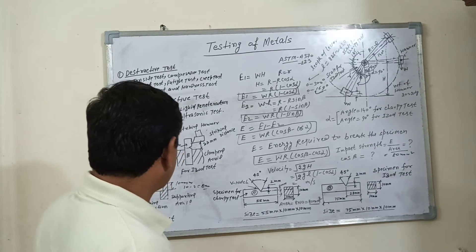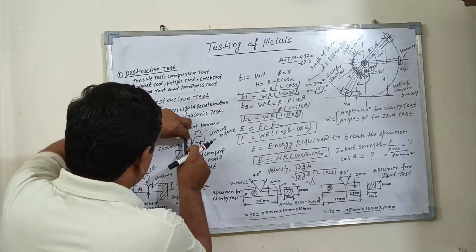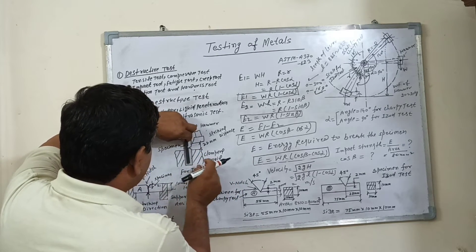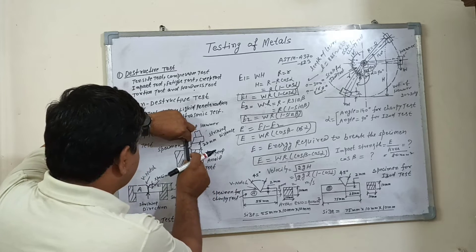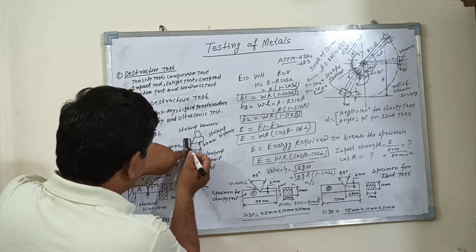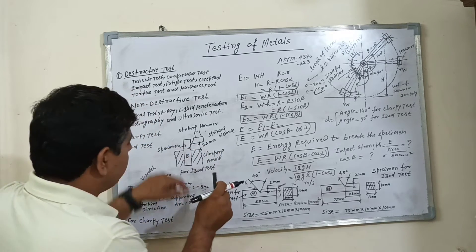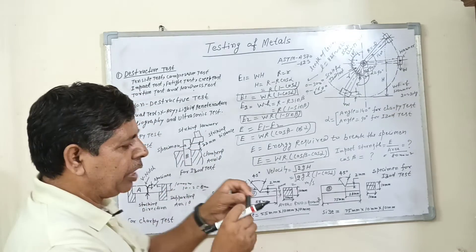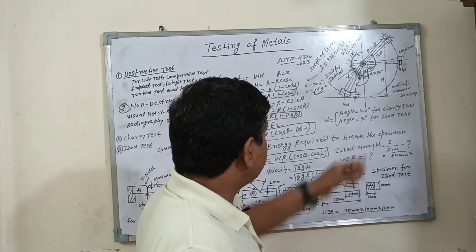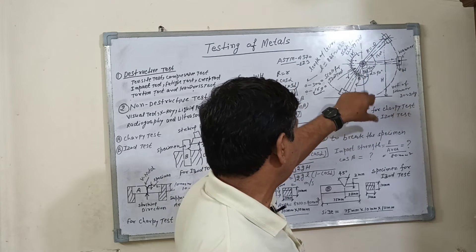This is the Izod sample. This sample is set here and clamped with the help of clamping devices. The notch will be in the path of the striking hammer to check the strength of this material. This is the impact test machine.